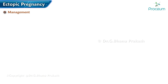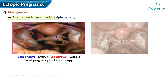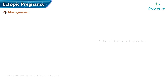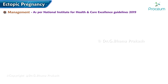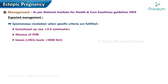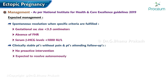Management: exploratory laparoscopy followed by salpingectomy is recommended in most cases. According to NICE guidelines 2019, expectant management — spontaneous resolution — is likely when specific criteria are fulfilled: a gestational sac size less than 3.5 cm, absence of a fetal heart rate, and serum beta-hCG levels below 1,000 IU/L. Where patients remain clinically stable without pain and can attend follow-up, no proactive intervention is necessary.